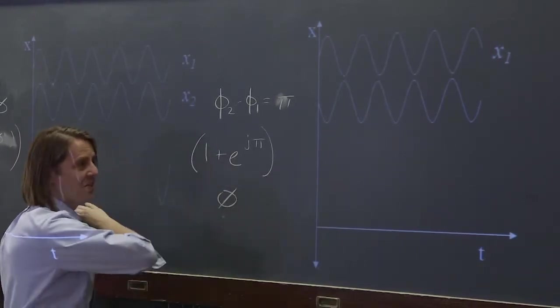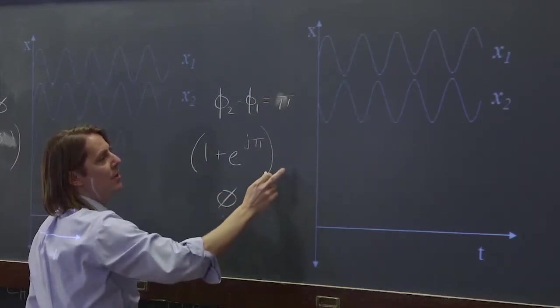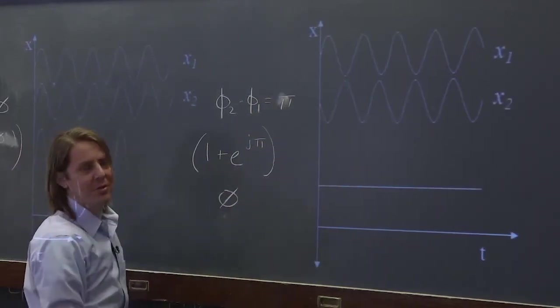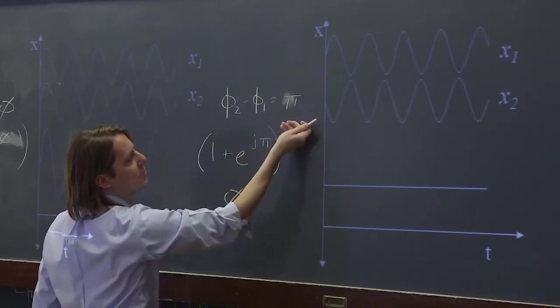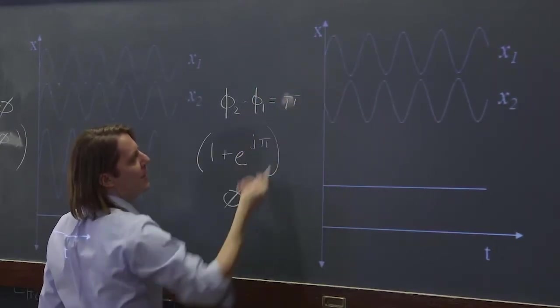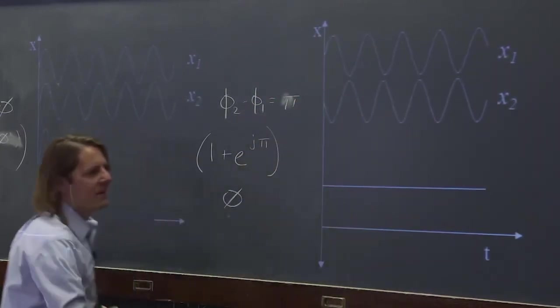So mathematically, it says you get nothing. And sure enough, we know that if we add these two things out of phase, we're going to get nothing. Everywhere this one's maximum, this one's minimum, you get 0. This one's minimum, that one's maximum, you get 0. When they're both 0, you get 0. Everything's 0.